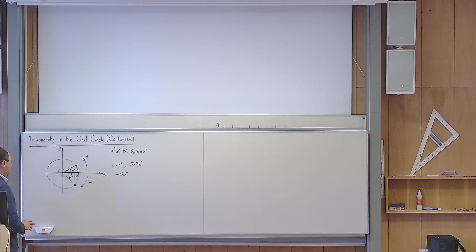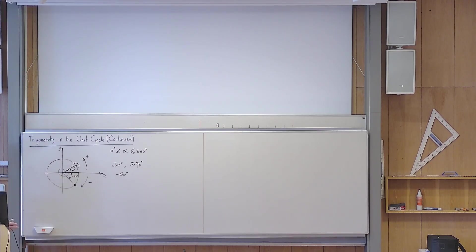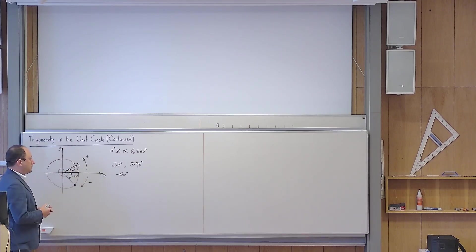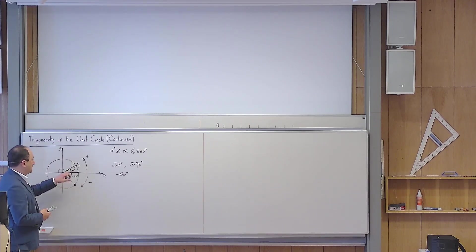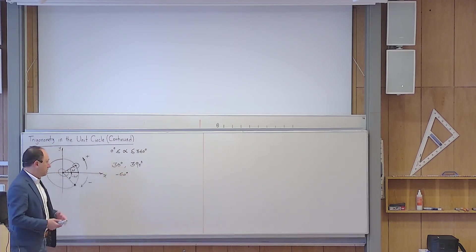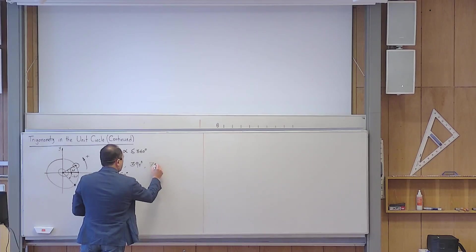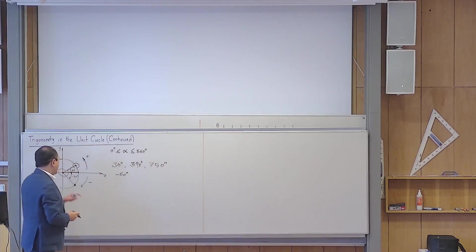That was more or less the same thing we talked about. We also talked about the general formula that generates all the angles corresponding to a given final point. Can you write a formula that generates all the names for angles that correspond to this point? One of them is 30 degrees, another is 390 degrees. I can also talk about 750 degrees — because two full rotations is 720 degrees, plus 30 more — so 750 degrees also ends up here.